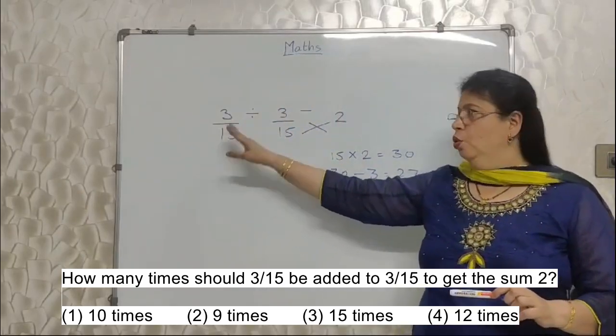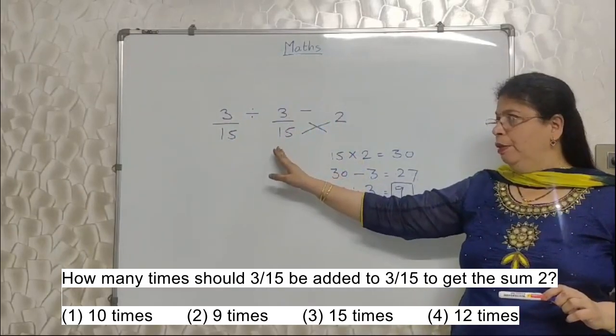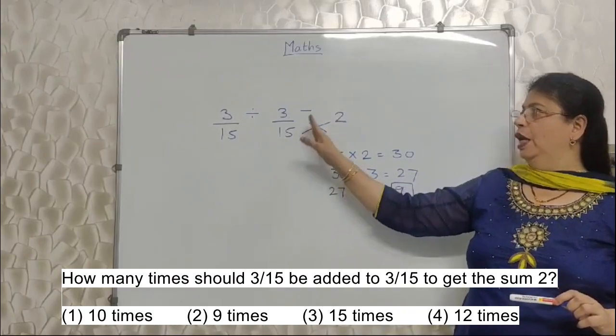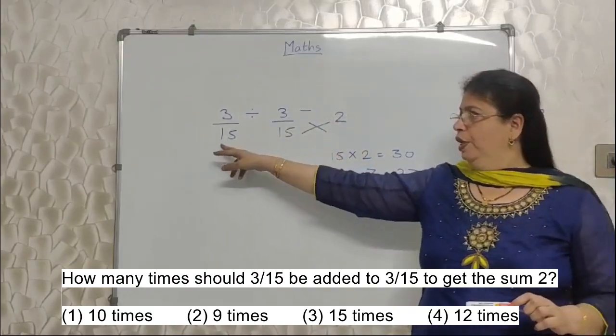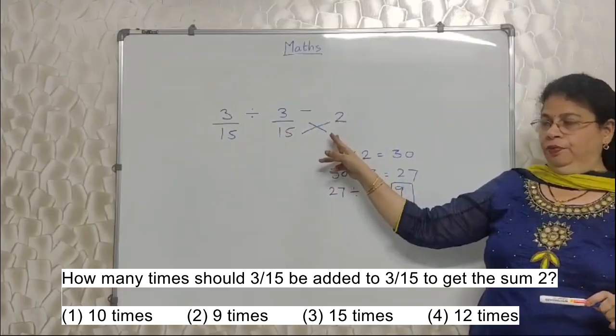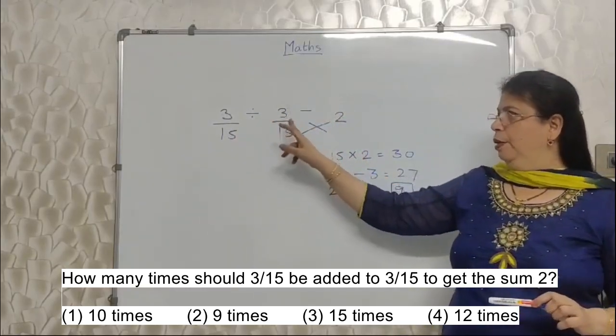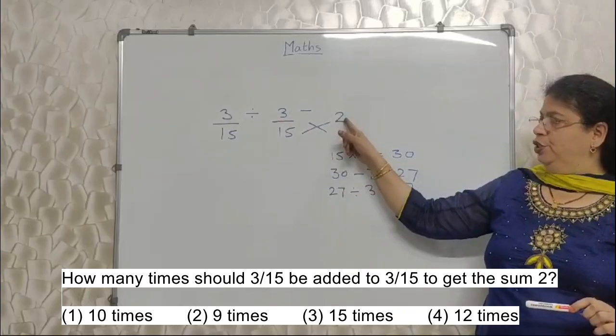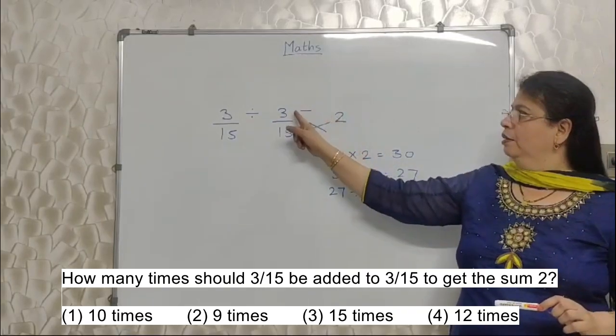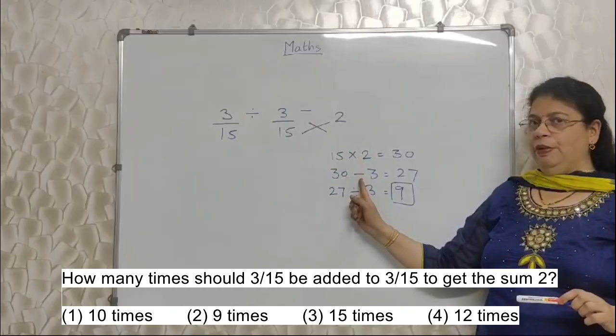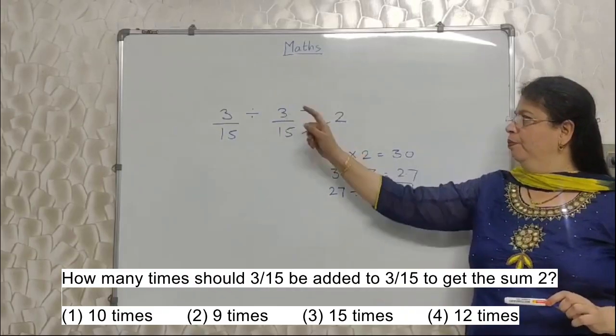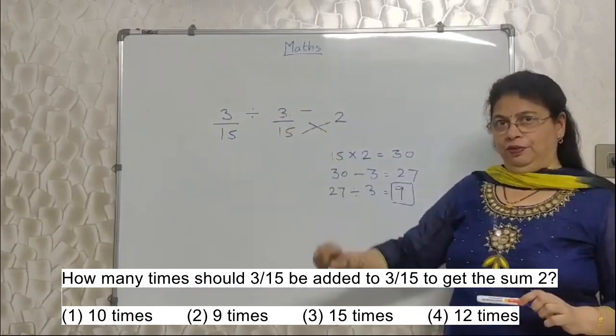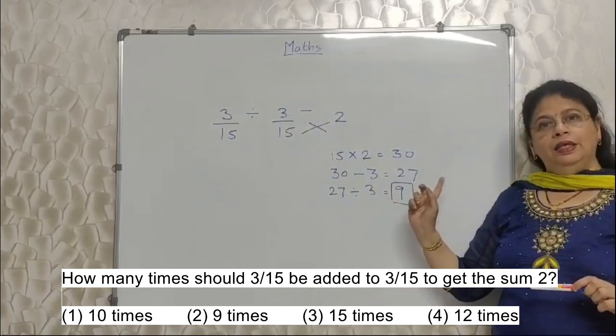3 upon 15, so I have written in this order: 3 upon 15, 3 upon 15, 2. Then multiplication first, this way. Then subtraction time, so subtract the middle number. Then division. Answer is 9.